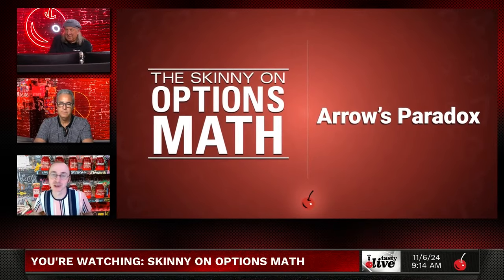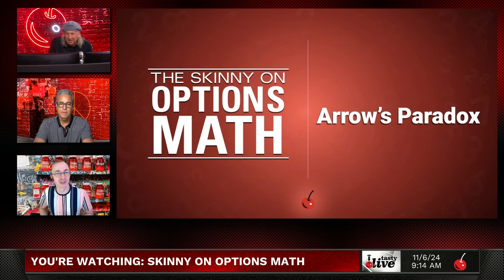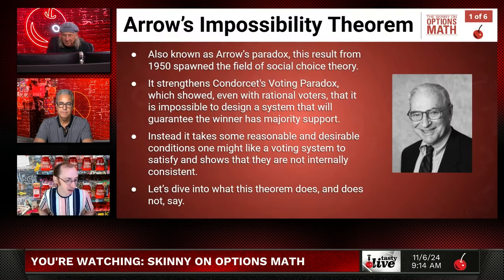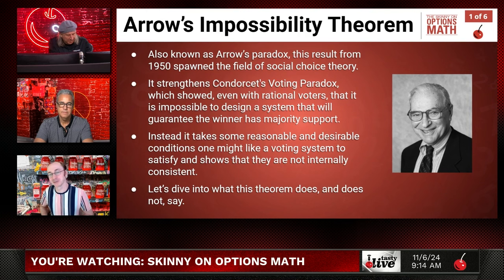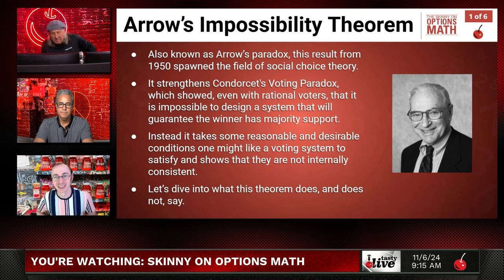Arrow's impossibility theorem, also sometimes called Arrow's paradox. In the spirit of this show where we always talk about paradoxes, we'll call it Arrow's paradox today. But I learned about it as Arrow's impossibility theorem. It's a theorem that can be disheartening when young mathematicians learn it, because it says that there's no perfect voting system — not even a really good voting system. So we'll sort of lay that out.